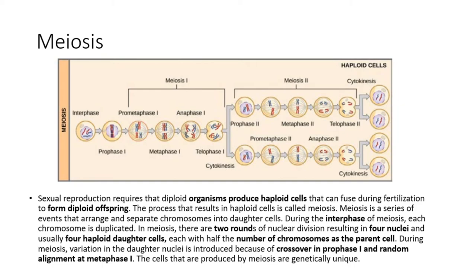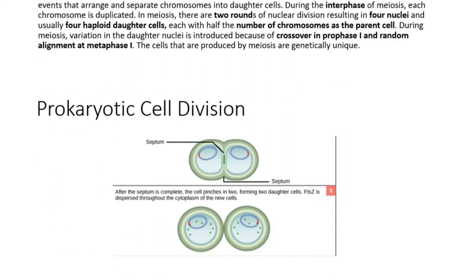During meiosis, variation in the daughter nuclei is introduced because of crossover in prophase I and random alignment at metaphase I. The cells that are produced by meiosis are genetically unique.